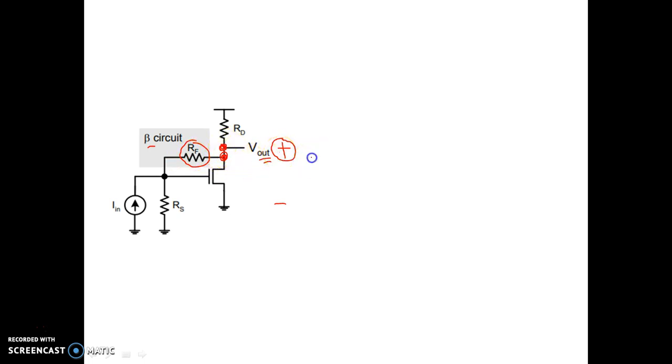So this is voltage sampling because when two nodes are the same, then that is voltage sampling.